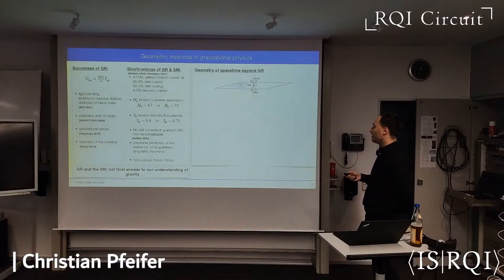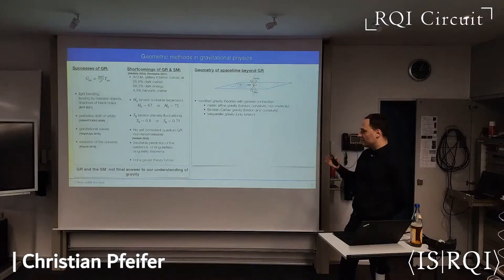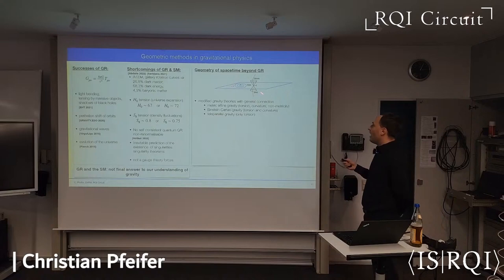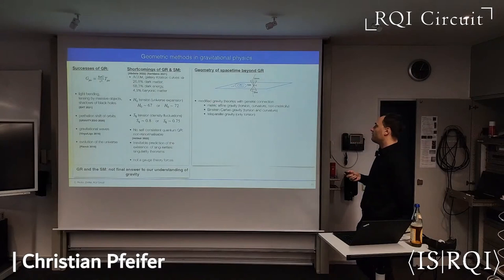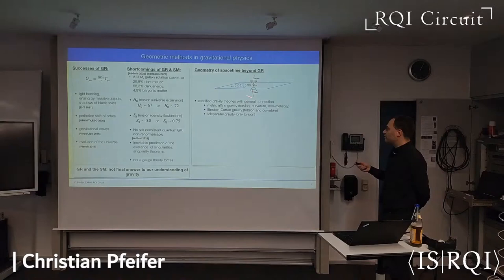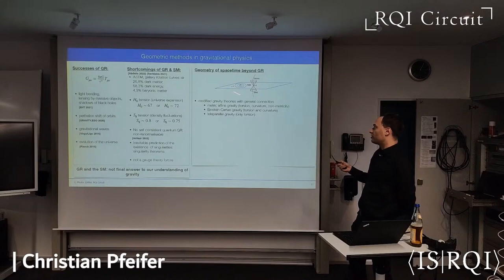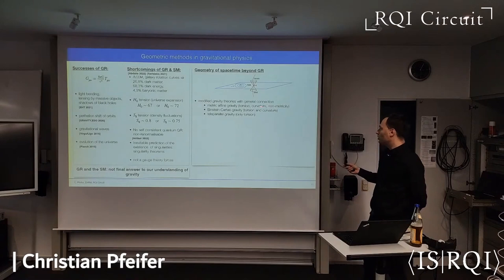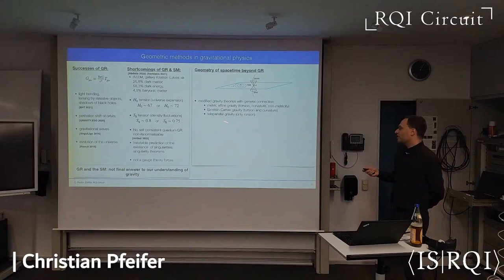I'm also looking at that. Instead of modeling the geometry of space-time by a metric and the corresponding Levi-Civita connection and its curvature, we can look at modified gravity theories which describe the geometry of space-time more generally, for example with a metric and a general affine connection, which is called metric affine gravity. We include torsion and non-metricity to the curvature to find an improved description of the gravitational interaction in terms of a generalized geometry of space-time.